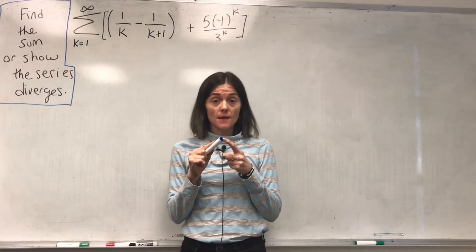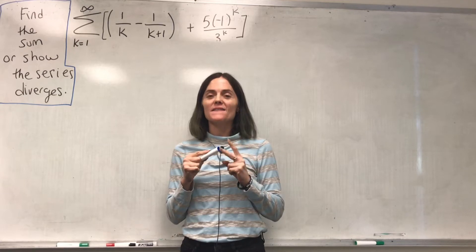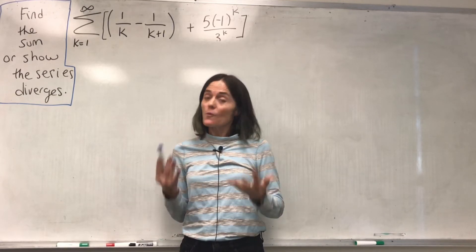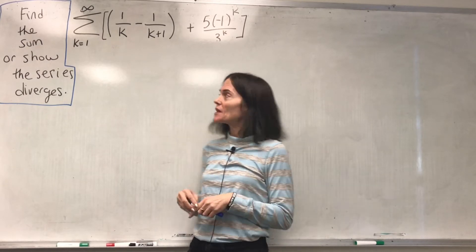We know we can find the sum of a convergent telescoping series, and we can find the sum of a convergent geometric series. If it's not one of those two, it's very difficult to find the sum, as we know.